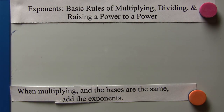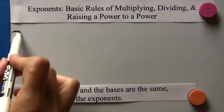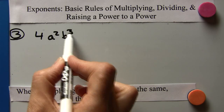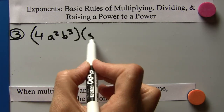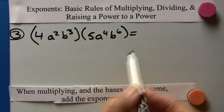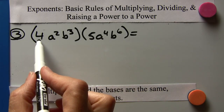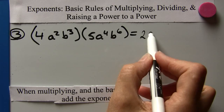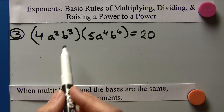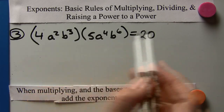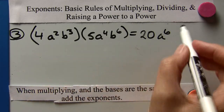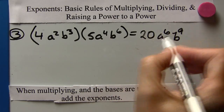Next problem: 4a squared b cubed times 5a to the fourth b to the sixth. We'll do the coefficients first — 4 times 5 is 20. The a's have the same base, so we add those exponents: a to the sixth. The b's are the same base, so we add those exponents — 6 and 3 is 9 — giving us b to the ninth. So the answer is 20a to the sixth b to the ninth.